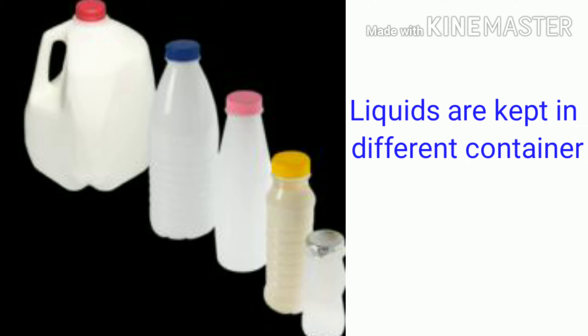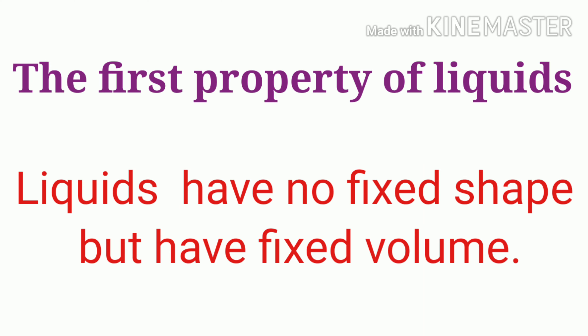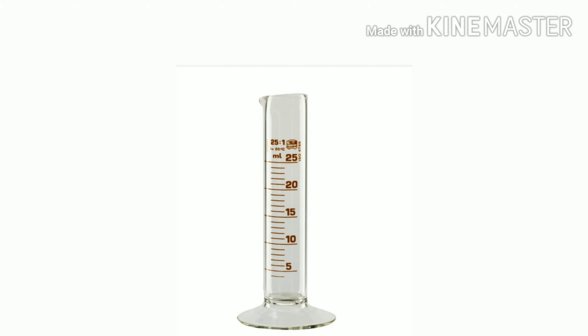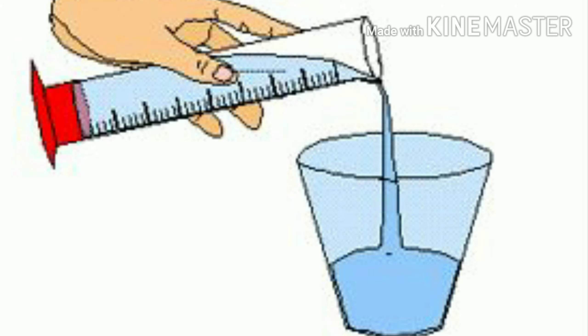By this we come to know the first property: liquids have no fixed shape but have fixed volume. To confirm the volume, take the same milliliters of liquid using a measuring cylinder. The volume remains the same from one container to another.